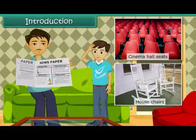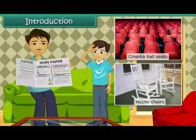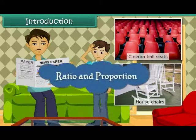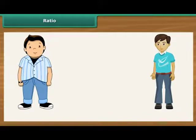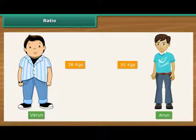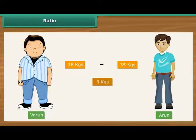How did Vivek's father arrive at this conclusion? Vivek's father applied the concept of ratio to arrive at the conclusion. In this lesson, you will learn about ratio and proportion. Ratio: We usually compare quantities and values by calculating their difference. For example, suppose the weights of two friends, Varun and Arun, are 38 kgs and 35 kgs respectively. We say that Varun is heavier than Arun by 38 minus 35, that is 3 kgs.